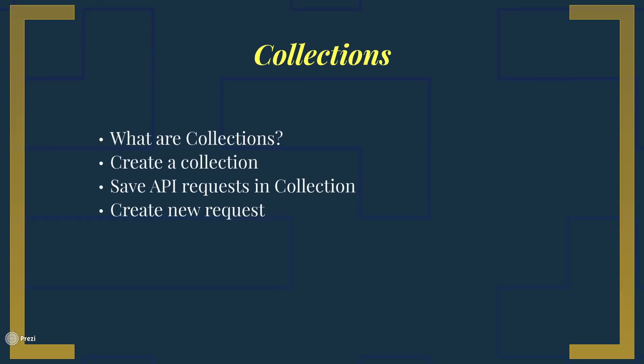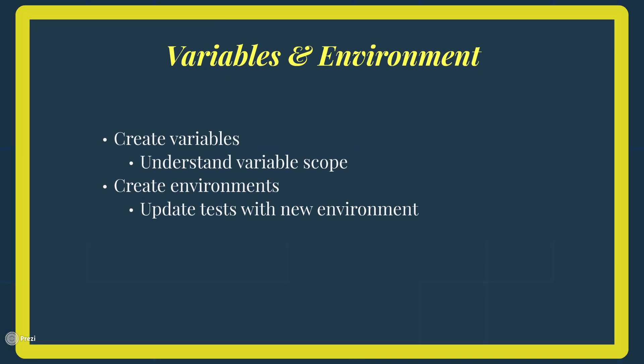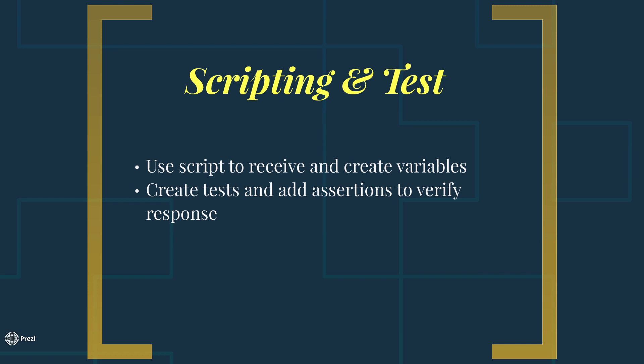From there, we will talk about collections — what are collections, how you can create a collection, save an API request in a collection, and then use that saved request to create a new request. Then we will cover variables and environments and how they work in Postman. We will create our own variables, talk about different variable scopes in Postman, then create our environment and update our tests with the new environment. From there, we will start talking about how scripting and tests work in Postman. We will use scripts to receive and create variables which we can pass into our other tests, and then we will create tests and add assertions to verify responses.